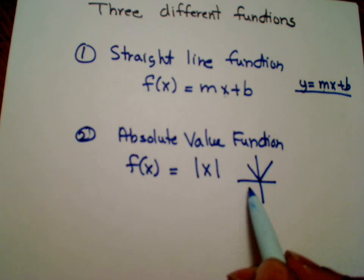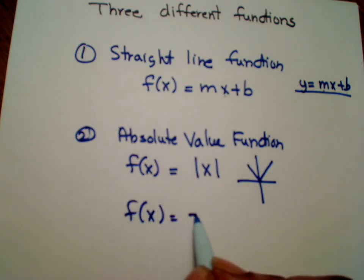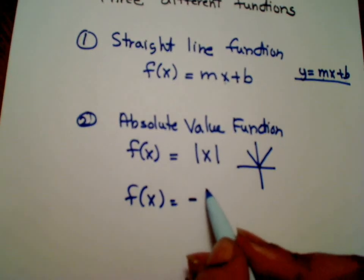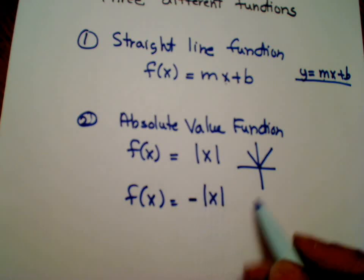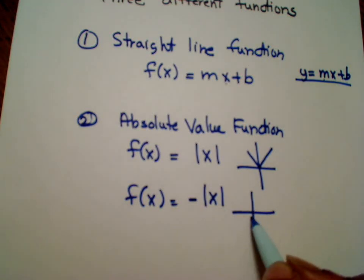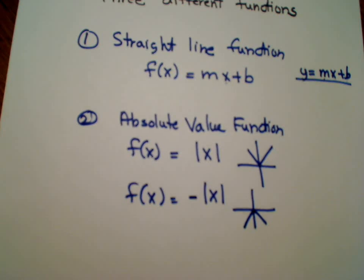If I gave you f(x) is equal to say a negative in front, the only thing that's going to happen is still a V because you have the absolute value, but it's going to flip in the reverse way.